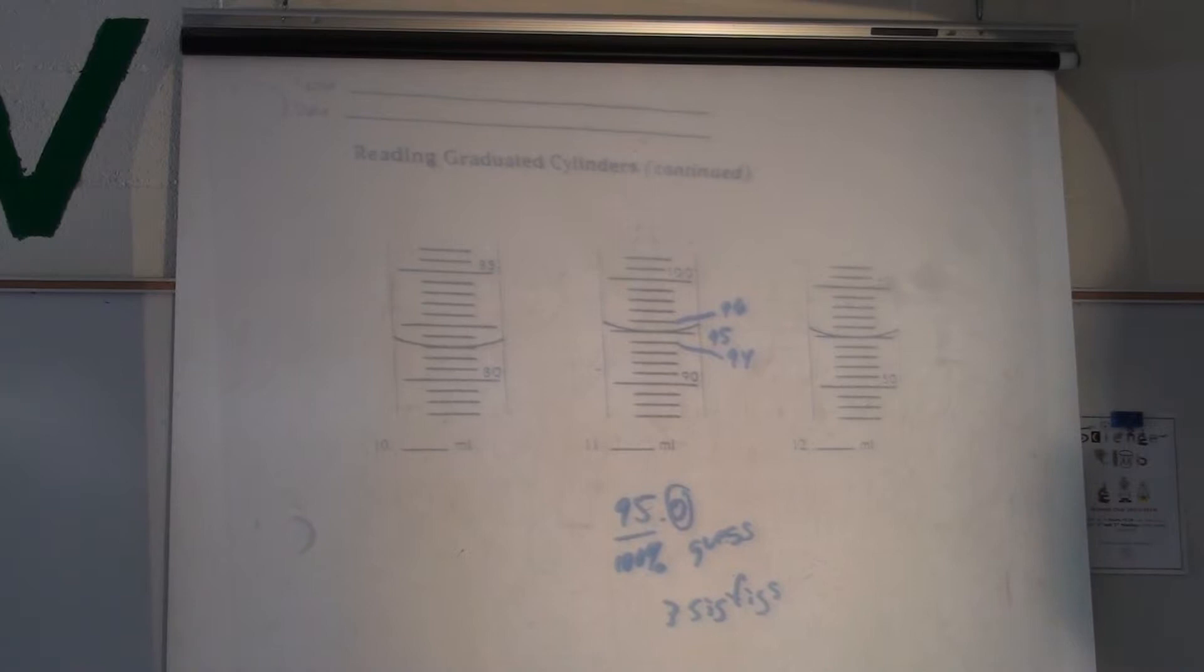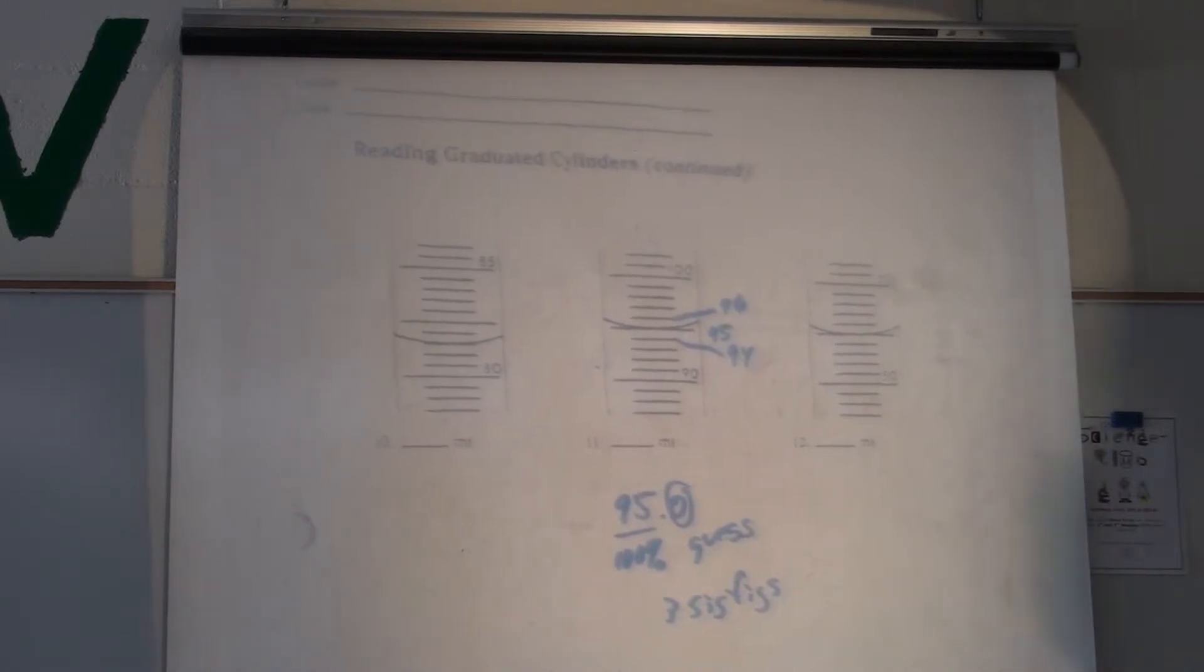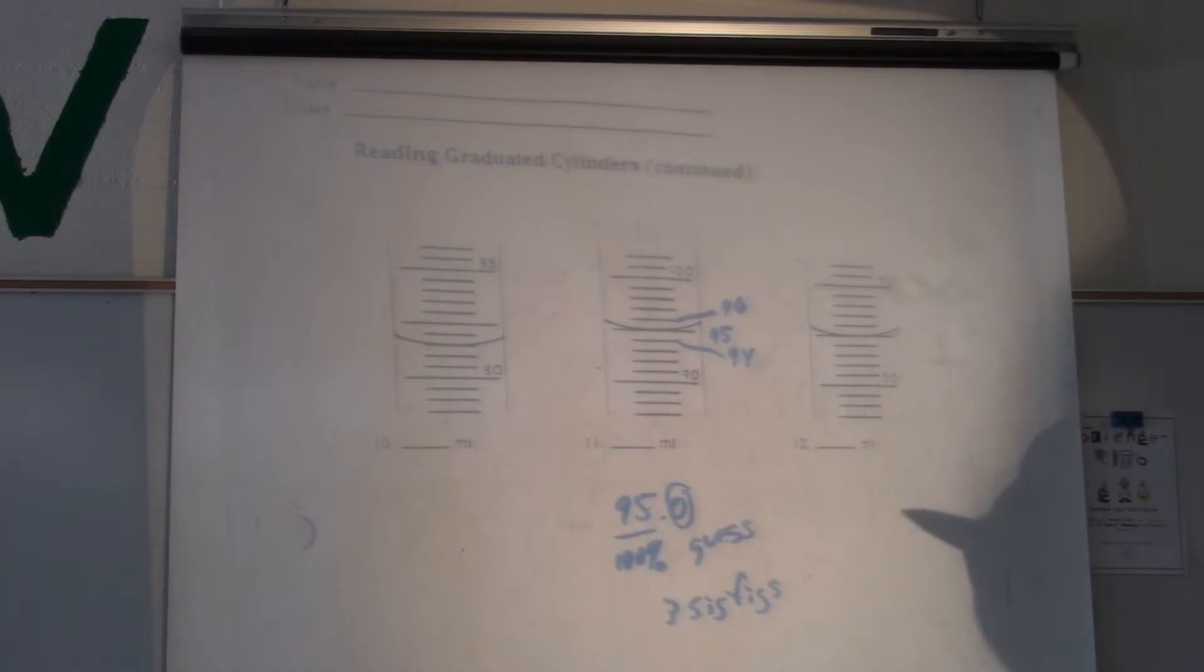How about number 12 there, Krieger? Um, 55.0. Because it goes up by ones, you have to guess out to the tenth. So there's the guess, there the sure about.